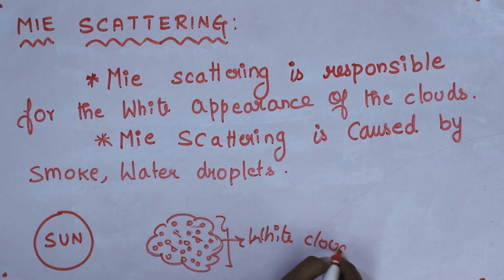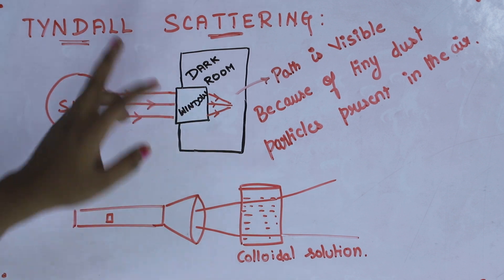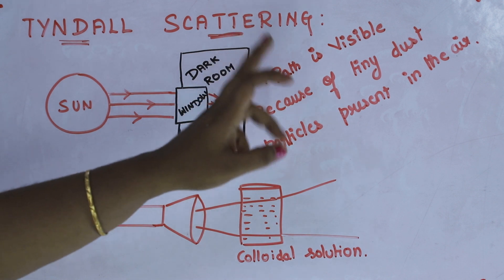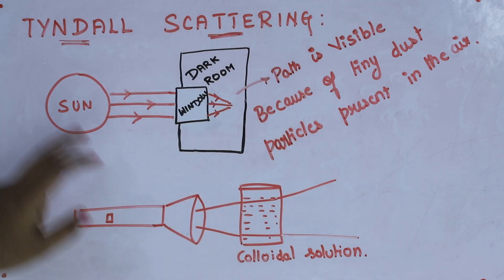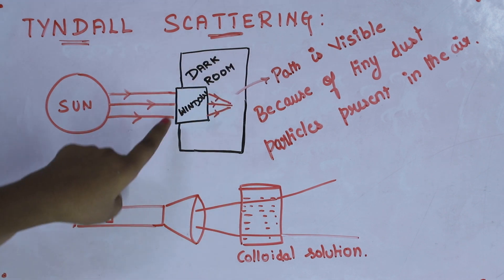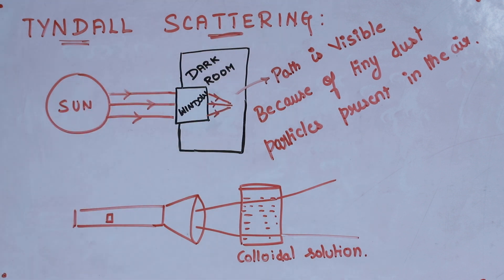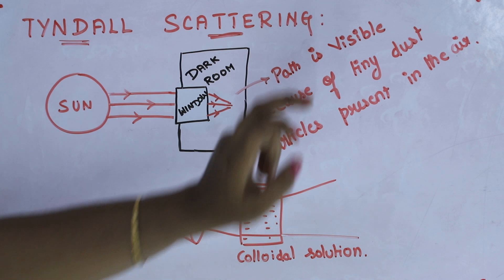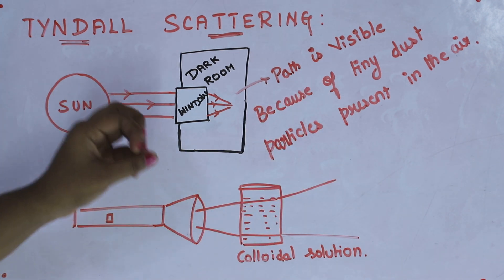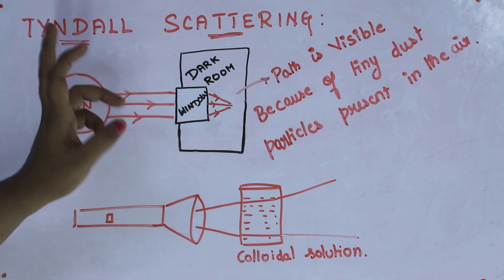That is why the clouds are in white color. Now we are going to see what is Tyndall scattering. Tyndall scattering is also known as the Tyndall effect. When a beam of light enters a dusty room through a window, its path is visible because of the tiny particles present in the air that scatter the beam of light. This effect is called the Tyndall effect or Tyndall scattering.